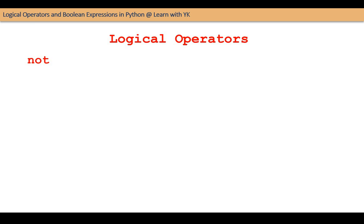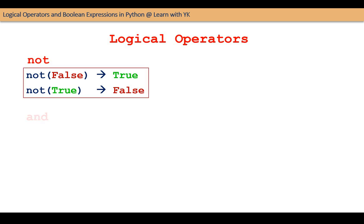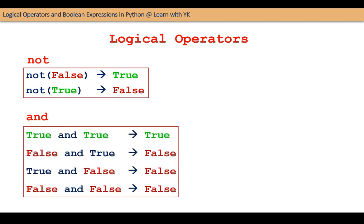In the simplest terms, NOT negates a condition, i.e. NOT of false is true and NOT of true is false. The operator AND joins two conditions and returns true if both the conditions are true, otherwise it returns false. It means that true AND true is true, false AND true is false, true AND false is false, and false AND false is also false.